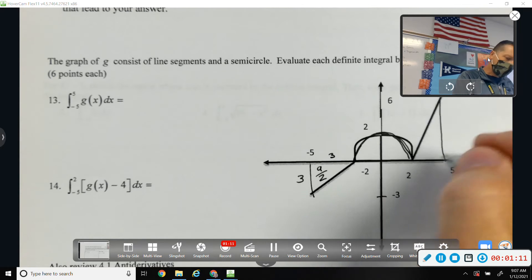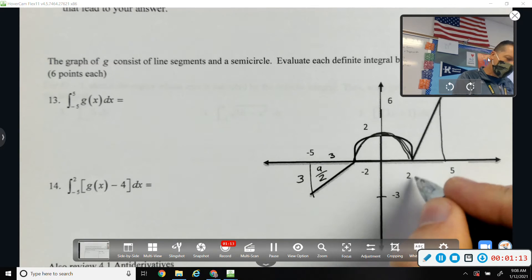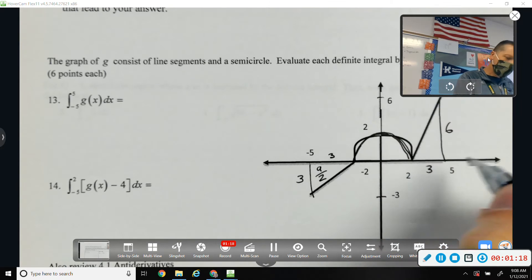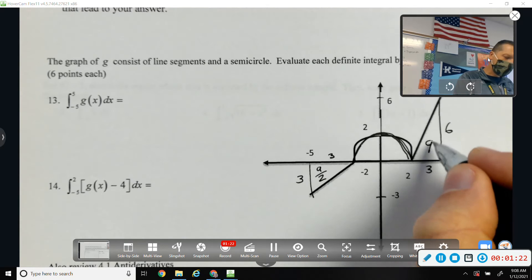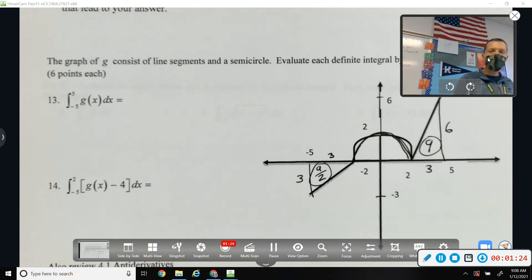On this side, from 2 to 5 is 3, 6 tall, so 18 over 2 is 9. That one will be positive.